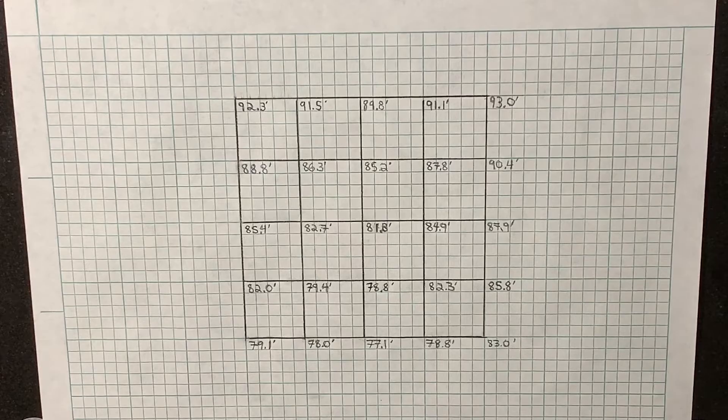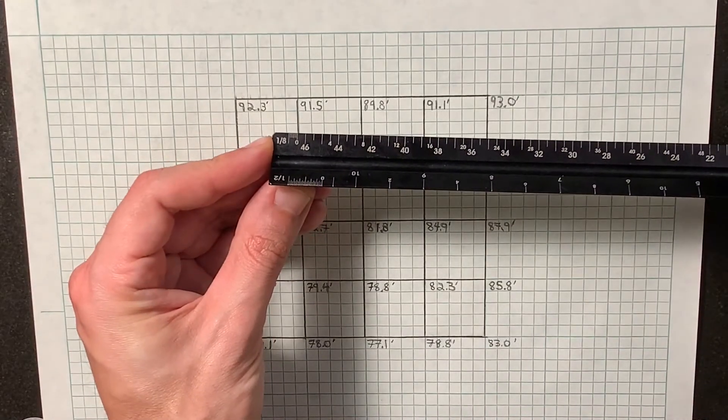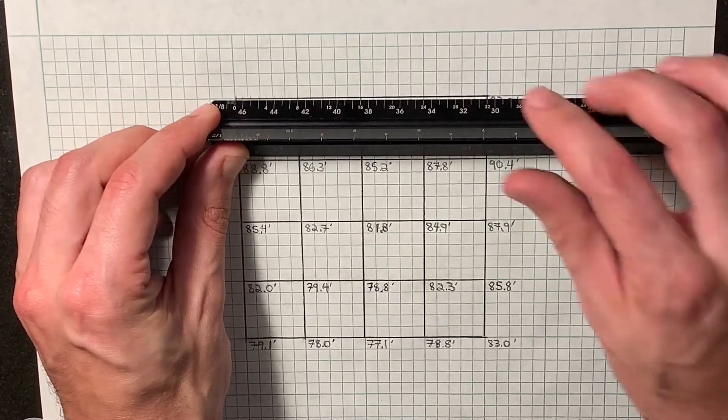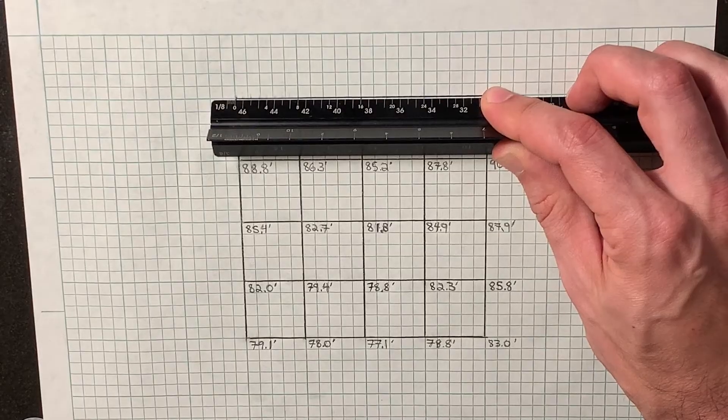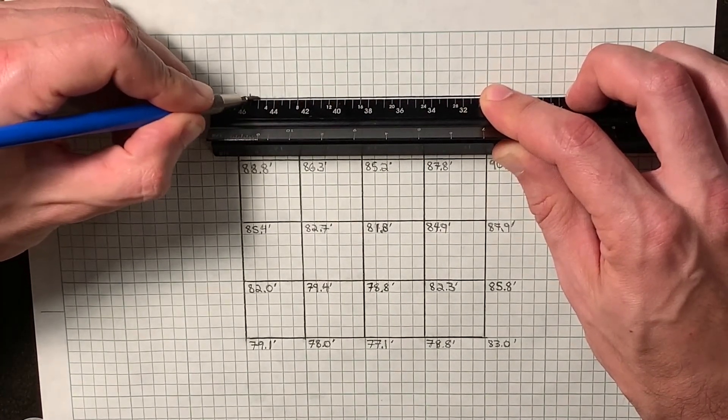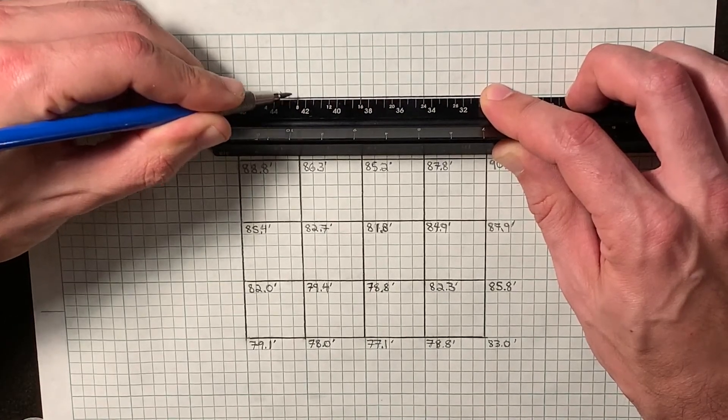In this case, since our grid is laid out in one inch by one inch grid squares, our architect scale provides a quick solution as it comes with a standard one-eighth inch to one inch scale. With this scale already divided equally into eight parts per inch, we simply lay it along our horizontal line and mark each space accordingly.